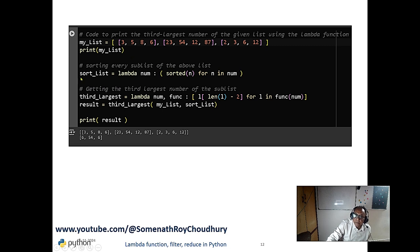This is where we just do this that way. And the result is coming like six, fifty-four, six. Six is the third largest here. Here fifty-four is the third largest here. And here six also.